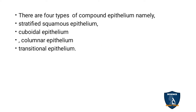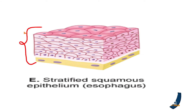There are four types of compound epithelial tissue: stratified squamous epithelial tissue, stratified cuboidal epithelial tissue, stratified columnar epithelial tissue, and transitional epithelial tissue. Stratified squamous epithelium is seen in the esophagus — the food pipe region where food passes from the mouth to the stomach.